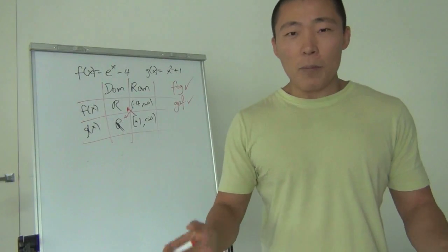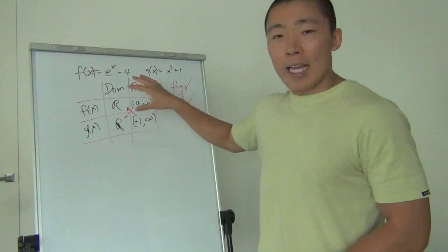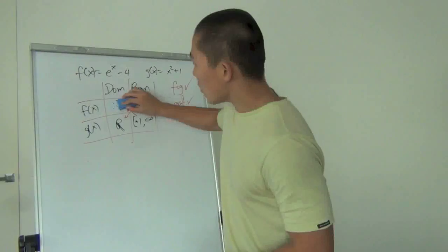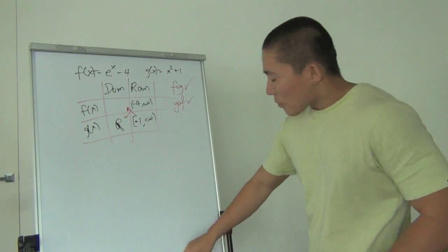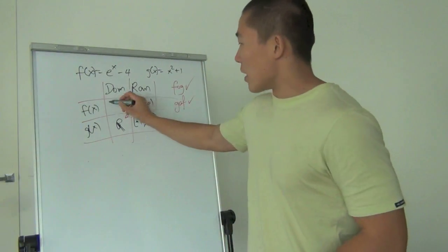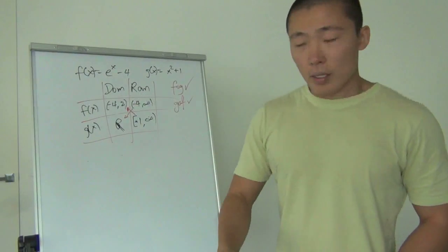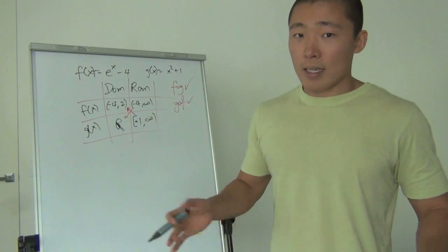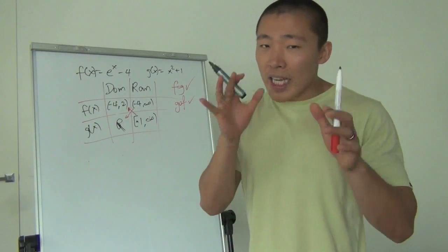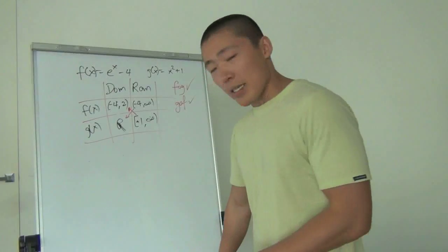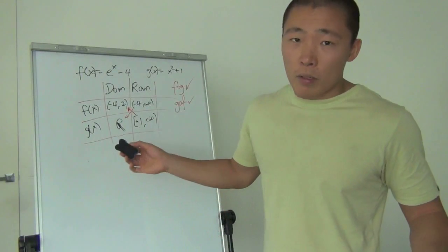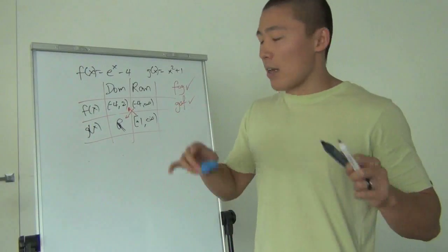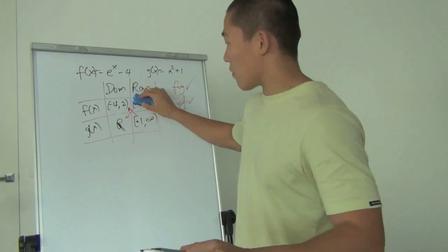Both fog and gof exist in this particular case. Now let's change things slightly — say the range of g was (−4, 2) instead. Does that fit within the domain of f? No, it doesn't — so it wouldn't exist. It's a simple concept: if it fits, it exists; if it doesn't fit, it doesn't exist.